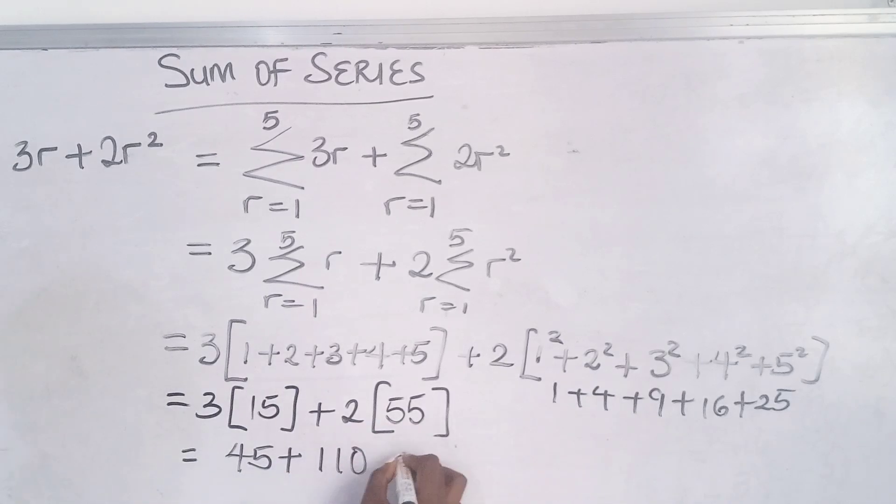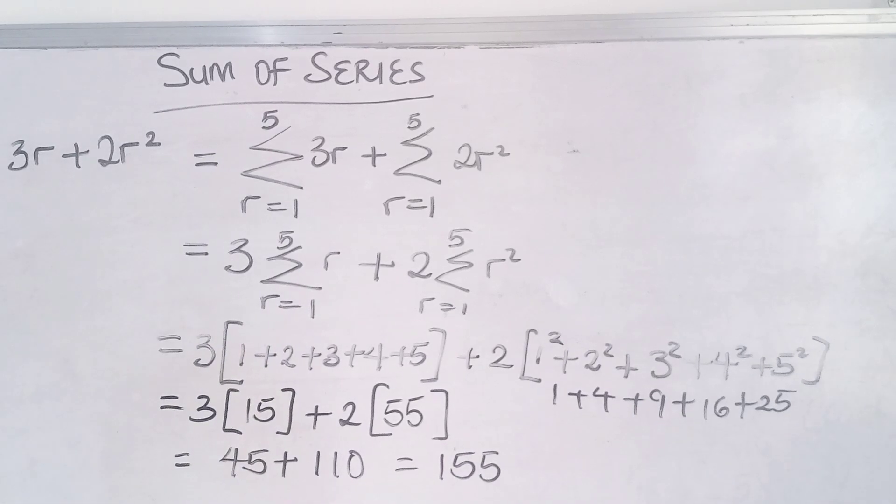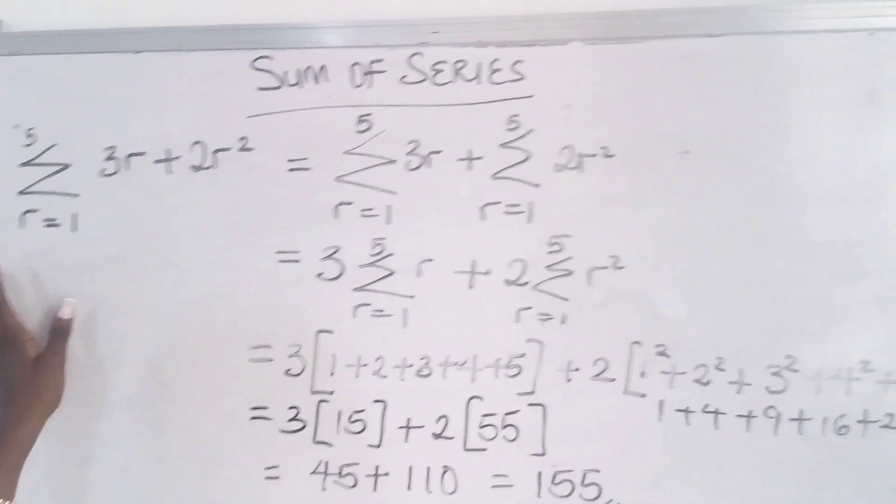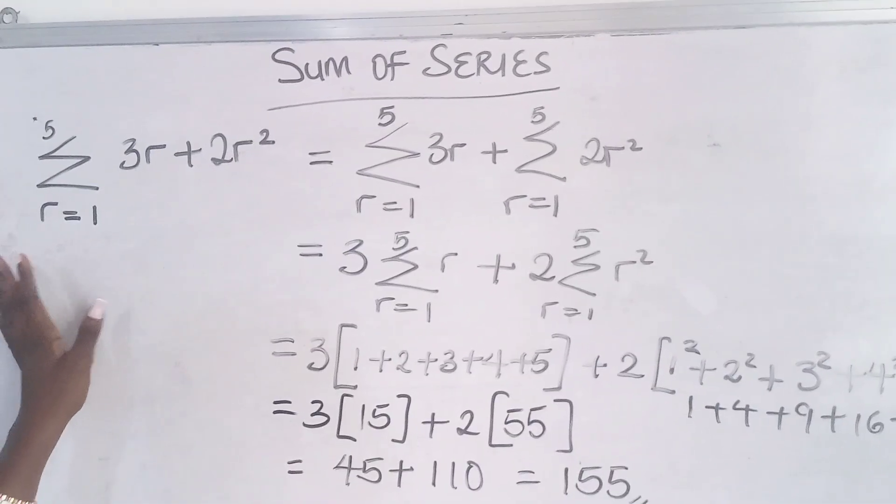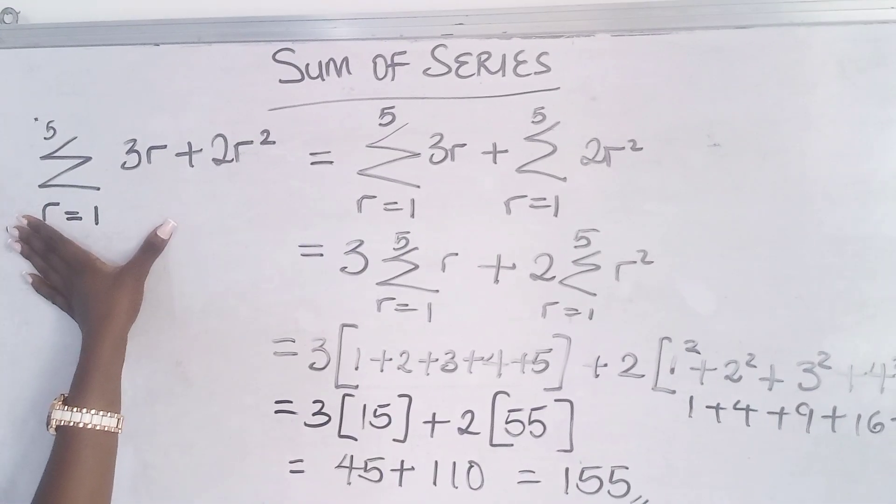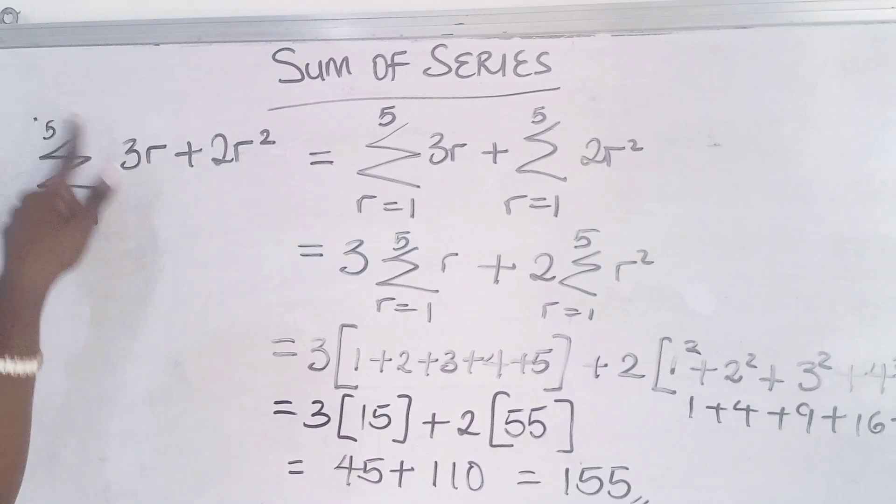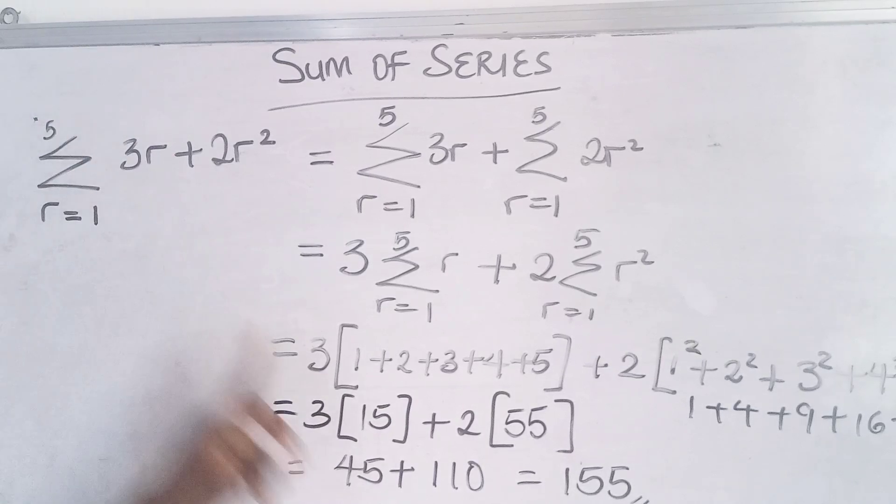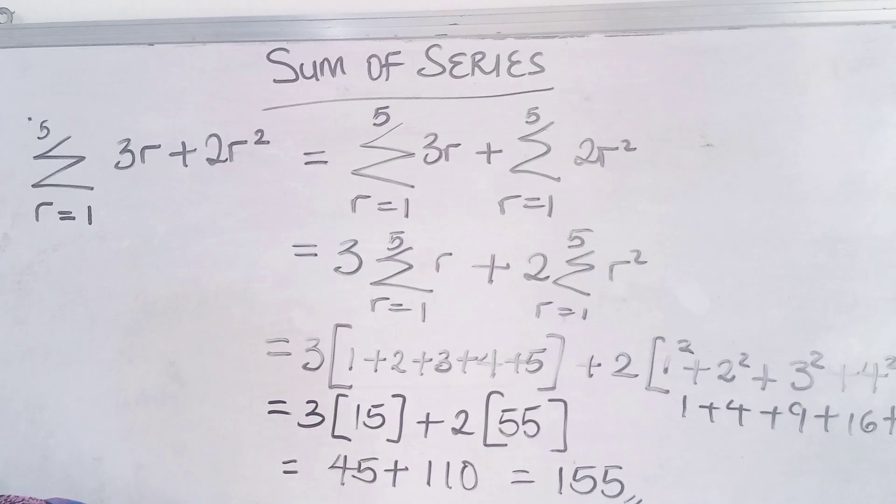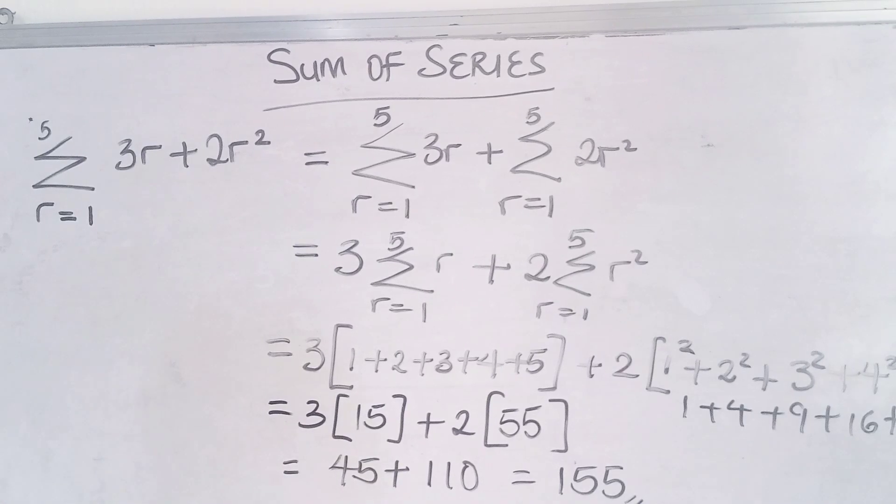When you add this up, you get 155. That tells us that when you sum this up where r ranges from 1 to 5, you are going to get 155.